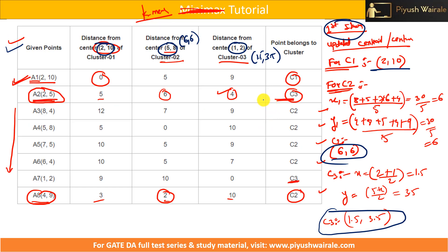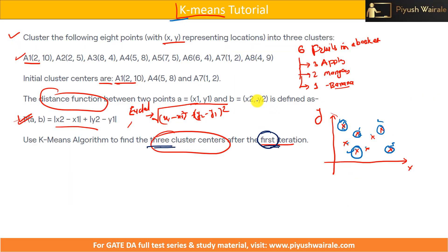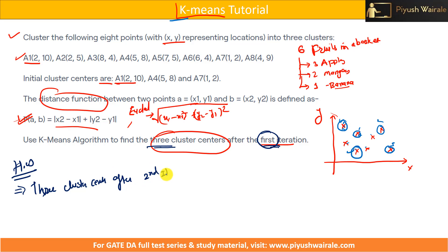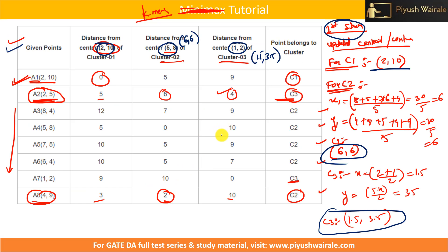There is one homework question for you: find out the three cluster centers after the second iteration. Tell me the updated centroid for C1, C2, and C3. We have already calculated for the first iteration, and I already told the procedure. You just need to do the calculation. Tell me in the comment section what will be the value of C1, C2, C3 after the second iteration.